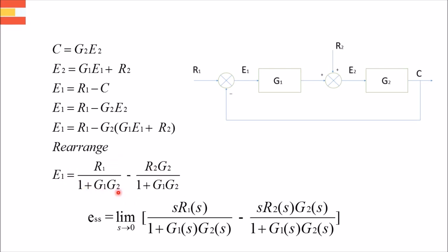And obtain its Laplace transform. After obtaining its Laplace transform, we multiply the Laplace transform with S, and then put the limit S tends to 0, and get the steady state error.